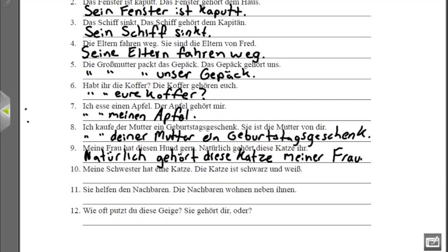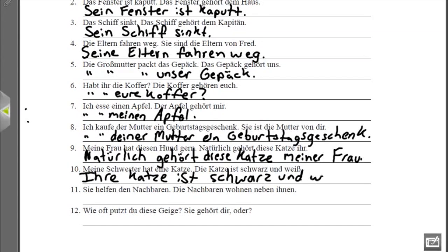Nummer zehn: 'Meine Schwester hat eine Katze' — my sister has a cat. 'Diese Katze ist schwarz und weiß' — this cat is black and white. We want to say my sister's cat, or her cat, is black and white. The base possessive is 'ihr,' and we add -e at the end because Katze is feminine nominative. 'Ihre Katze ist schwarz und weiß' — her cat is black and white.